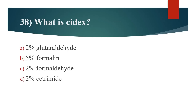38th question: What is Cidex? Option A: 2% glutaraldehyde. Option B: 5% formalin. Option C: 2% formaldehyde. Option D: 2% cetrimide. Answer is Option A: 2% glutaraldehyde.